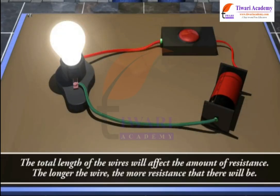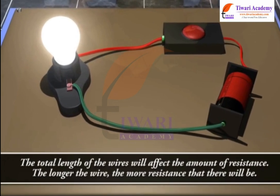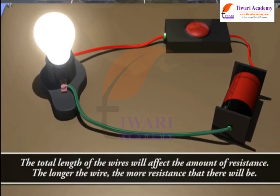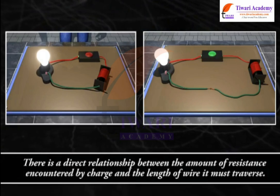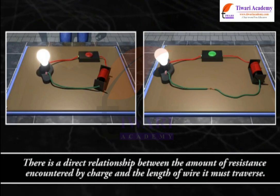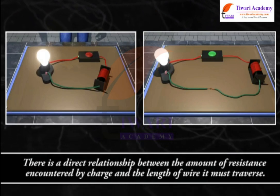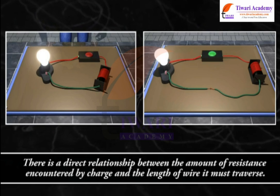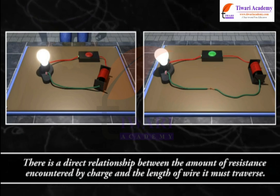The total length of the wires will affect the amount of resistance. The longer the wire, the more resistance there will be. There is a direct relationship between the amount of resistance encountered by charge and the length of wire it must traverse.